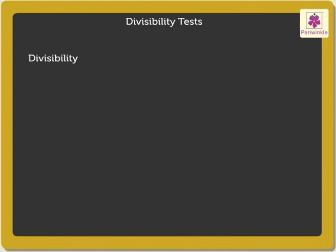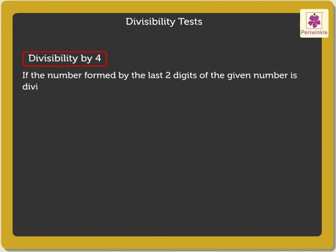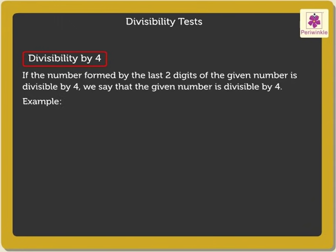Divisibility by 4. If the number formed by the last two digits of the given number is divisible by 4, we say that the given number is divisible by 4. For example, look at the number 164. Its last two digits form the number 64, which is divisible by 4. Thus, the whole number 164 is divisible by 4.